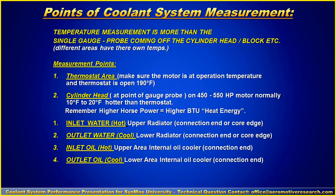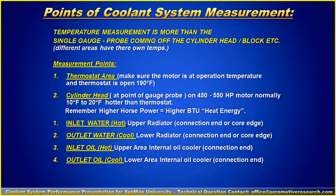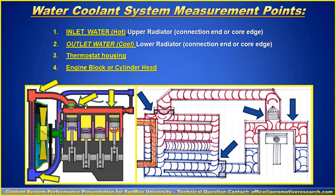The measurement points include the thermostat area — make sure the motor is at operational temperature and fully open — the cylinder head, which is usually where your gauge probe is at. On about a 500 horsepower motor, the cylinder head is going to be about 10 to 20 degrees hotter than the thermostat, because with higher horsepower there are more BTUs or heat energy moving. On the radiator, you've got the inlet where hot water is coming in and the outlet where cool water is coming out. This also works for the inlet and outlet on the oil cooler.